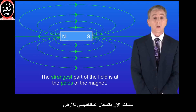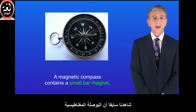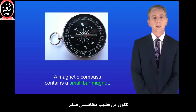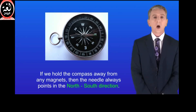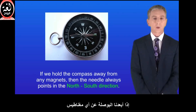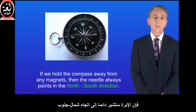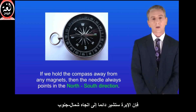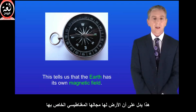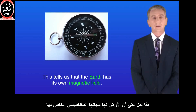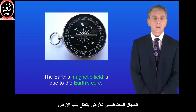We're going to finish by looking at the Earth's magnetic field. We saw earlier that a magnetic compass contains a small bar magnet. If we hold the compass away from any magnets, then the needle always points in the north-south direction. This tells us that the Earth has its own magnetic field, and the Earth's magnetic field is due to the Earth's core.